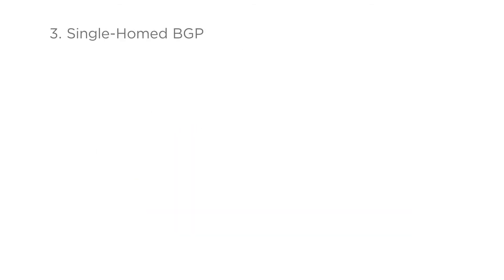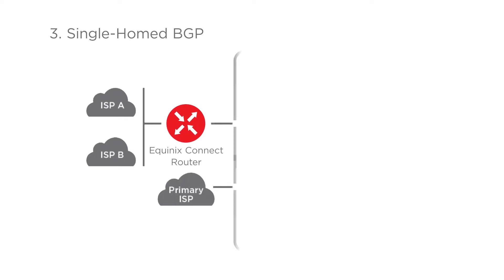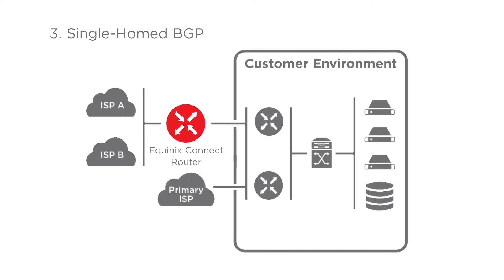Single-homed BGP, used for dynamic or secondary internet service. This is a medium to high bandwidth internet access path that can be used as dynamic or backup internet service. Often used to provide internet service diversity. Equinix Connect can be the primary or secondary internet service.